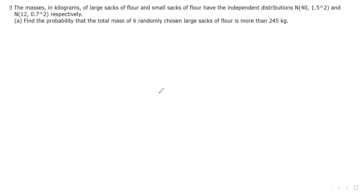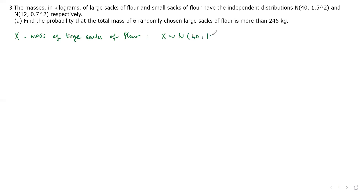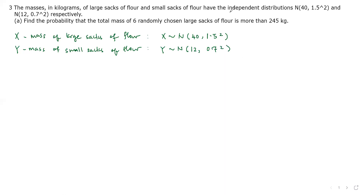We have two random variables. We let X be the random variable denoting the mass of large sacks. X follows a normal distribution with a mean of 40 and a standard deviation of 1.5. We let Y be the mass of small sacks. Y follows a normal distribution with a mean of 12 and a standard deviation of 0.7. X and Y are independent.